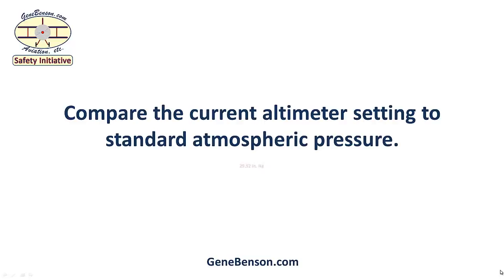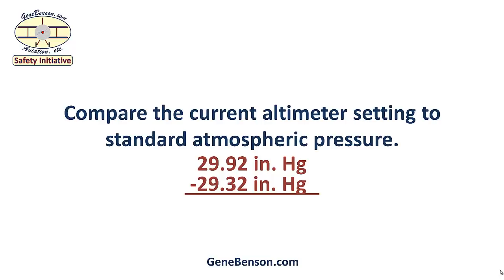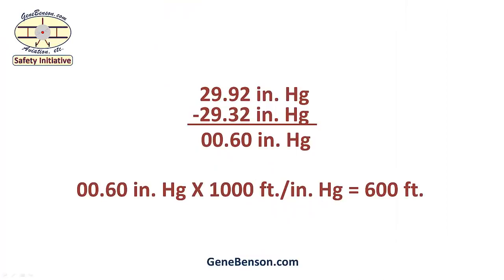Let's look at another example. Our standard value is still 29.92. In this case, let's say that the current altimeter setting is 29.32. Since that number is smaller than the standard value of 29.92, we will put it on the bottom to subtract. Our result in this case is 0.60.